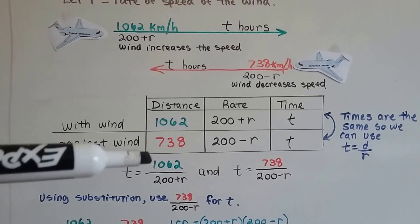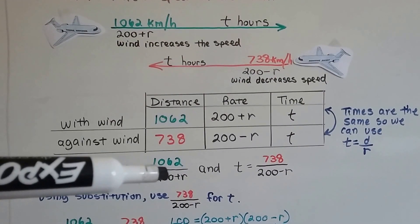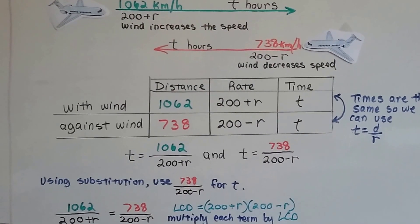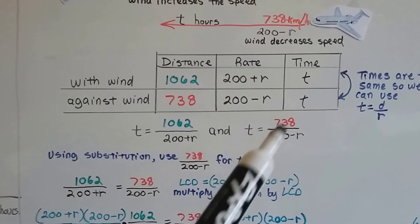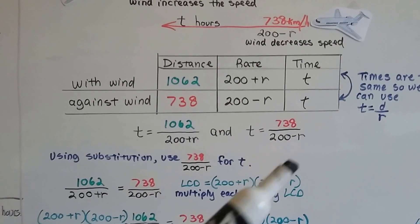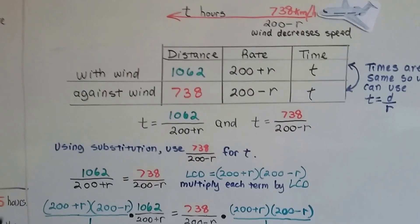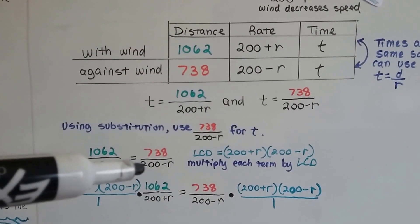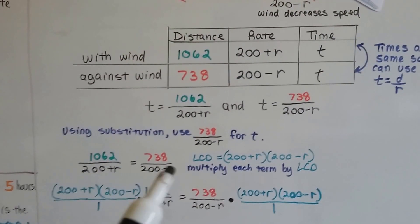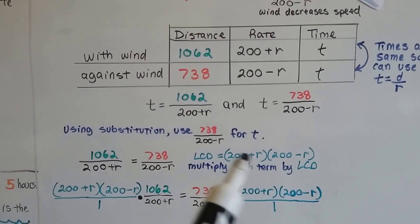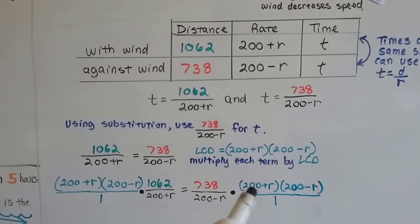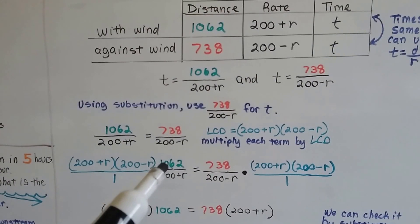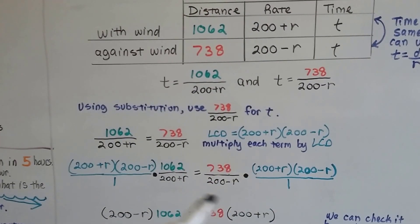Time equals the distance, 1,062, over the rate 200 plus r, and time equals 738 over 200 minus r. Now we can substitute this for t. It says it equals t, so we'll put it here as t. So now we've got 1,062 over 200 plus r is equal to 738 over 200 minus r. We need to find the least common denominator, which will be this pair right here in parentheses. We have to multiply each term by this pair.